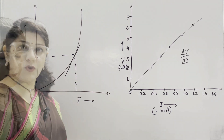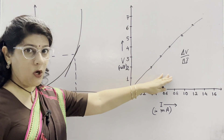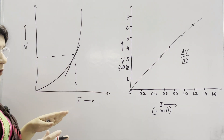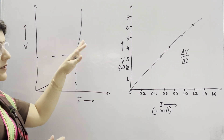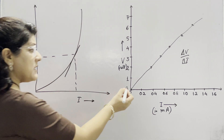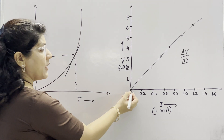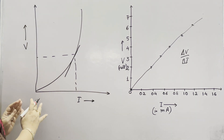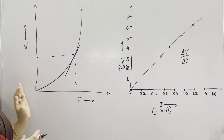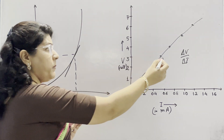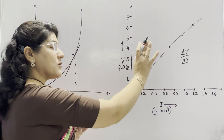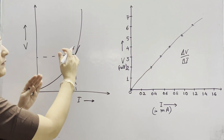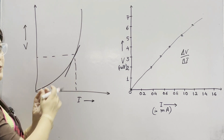To conclude: Ohmic resistors follow Ohm's law and their curve is a straight line starting from origin. Non-ohmic resistors do not follow Ohm's law — their curve is not a straight line and it is not necessary that the graph starts from the origin. The value of slope is the same at all points for Ohmic resistors, but for non-ohmic resistors the slope varies, giving different values of resistance at different points on the curve.